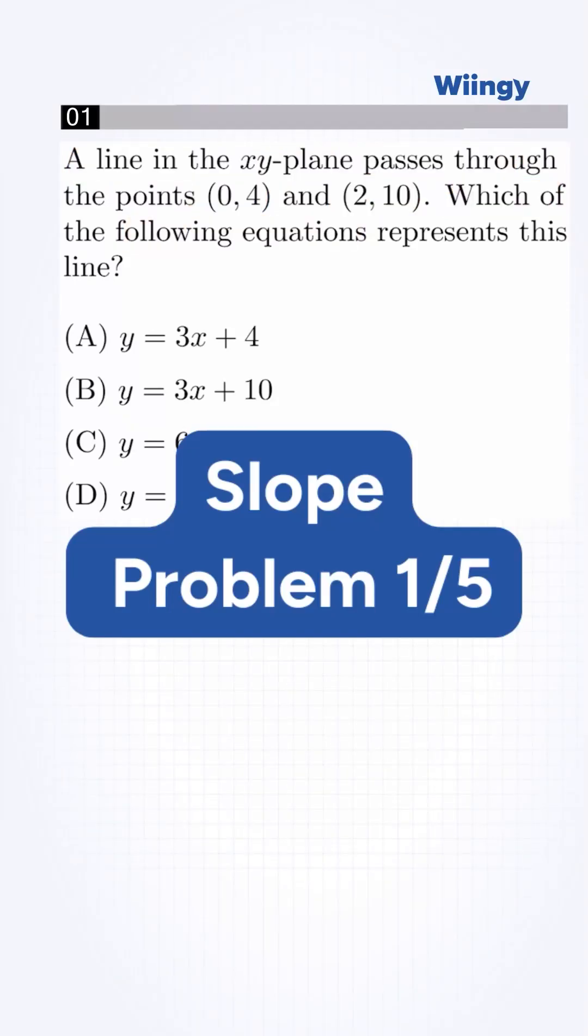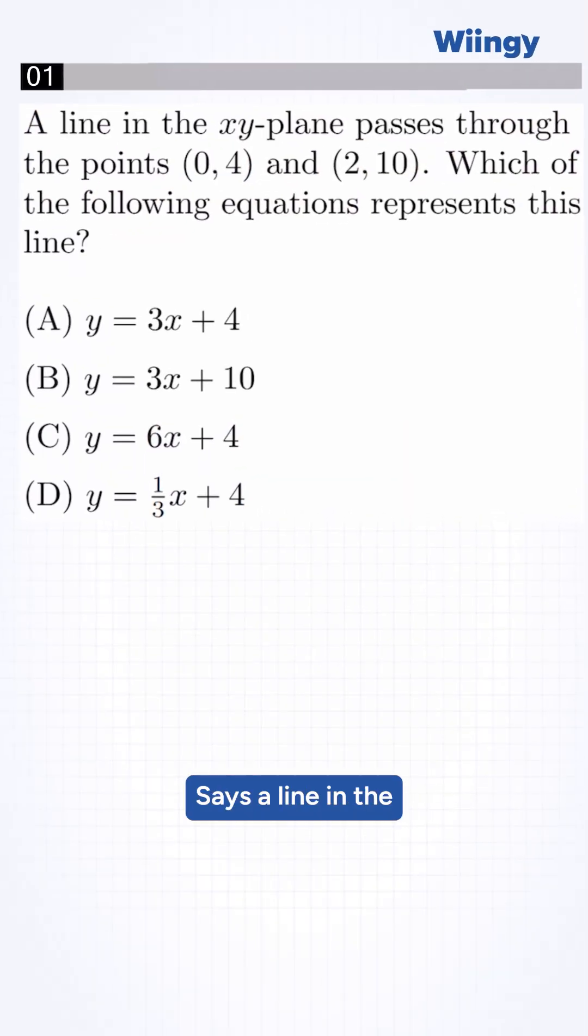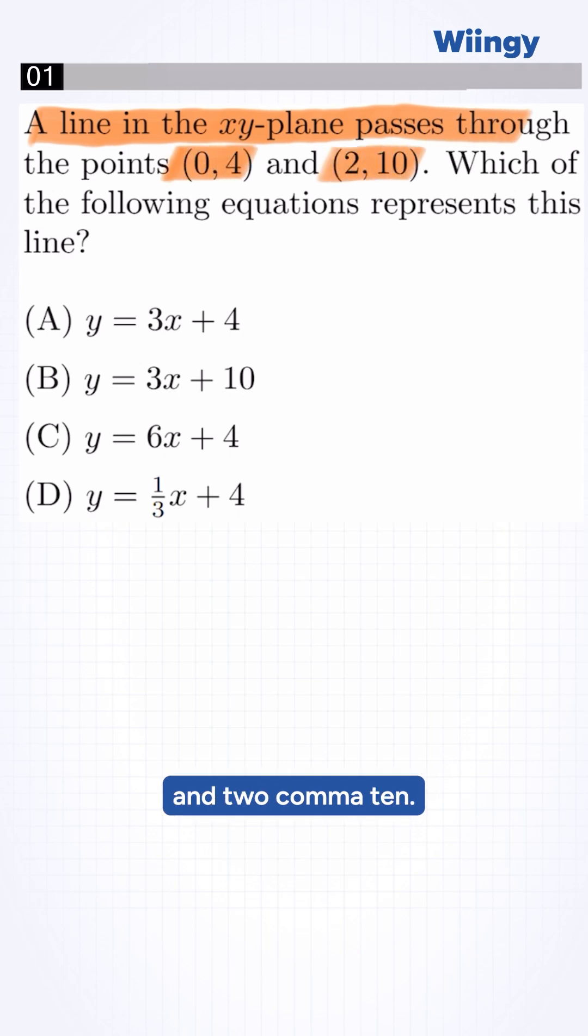Want to master this SAT problem? Let's solve. The question says, a line in the xy-plane passes through these points, 0 comma 4 and 2 comma 10. Which of the following equation represents this line?